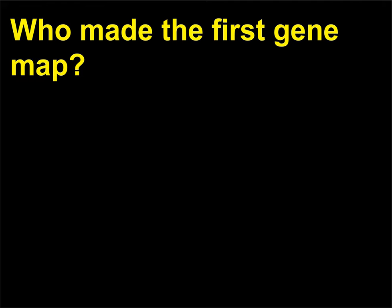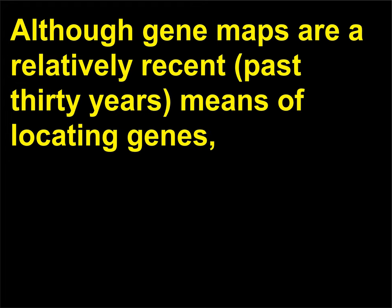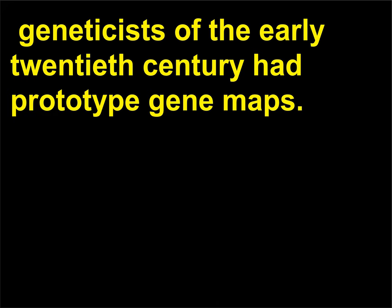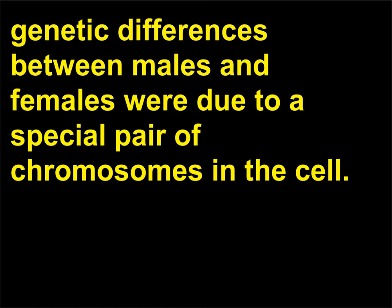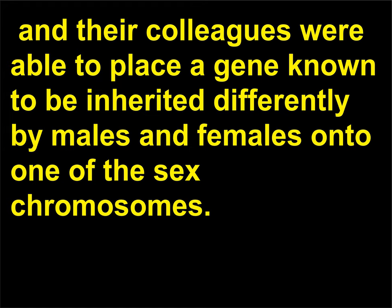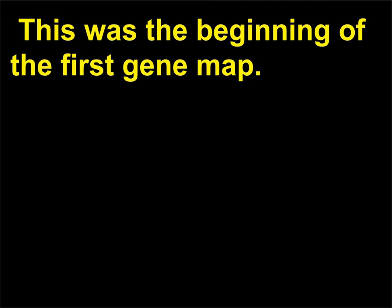Who made the first gene map? Although gene maps are a relatively recent (past 30 years) means of locating genes, geneticists of the early 20th century had prototype gene maps. Edmund Beecher Wilson (1856–1939) and his colleagues were the first to demonstrate that the genetic differences between males and females were due to a special pair of chromosomes in the cell. Thomas Hunt Morgan (1866–1945), Calvin Bridges (1889–1938), and their colleagues were able to place a gene known to be inherited differently by males and females onto one of the sex chromosomes. This was the beginning of the first gene map.